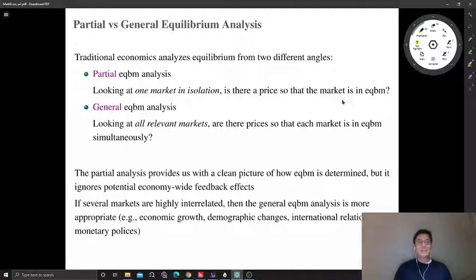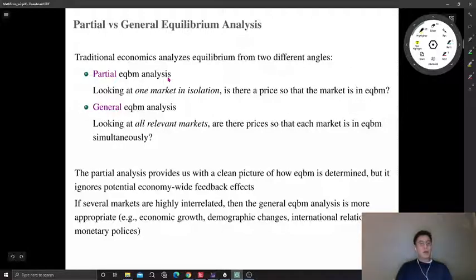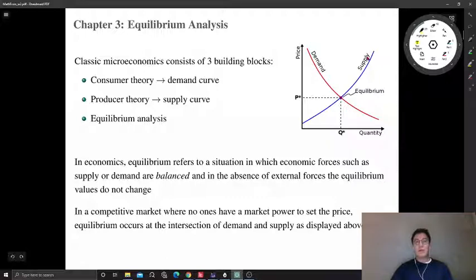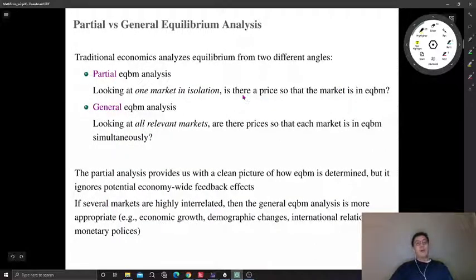This is equilibrium analysis, but it is just one part of equilibrium analysis in economics. Traditional economics offers two different angles. The first is called partial equilibrium analysis — we look at one market alone, with one supply curve showing quantity supplied at each price for one specific commodity, and one demand curve showing quantity demanded at each price. We ask if there is any price at which demand and supply are balanced so the market is in equilibrium.